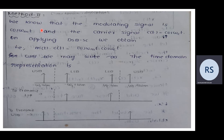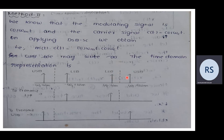Let the modulating signal be m(t) = cos(ωm·t) and carrier signal c(t) = cos(ωc·t). Applying DSB-SC modulation, we obtain m(t)·c(t) = cos(ωm·t)·cos(ωc·t). In the frequency domain, DSB-SC has a lower sideband at ωc - ωm and an upper sideband at ωc + ωm, with corresponding negative-frequency components at -ωc + ωm and -ωc - ωm.